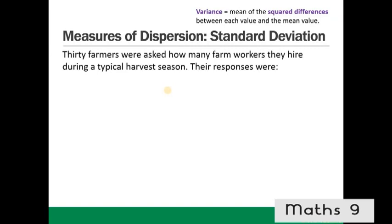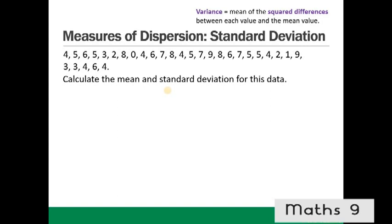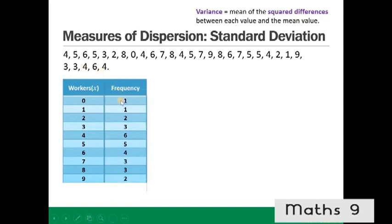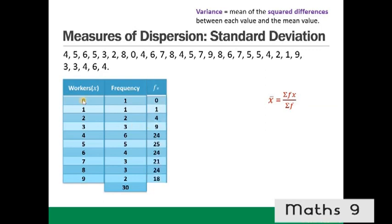Example: 30 farmers were asked how many farm workers they hire during a typical harvest season. We put the data in a frequency table with values 0–9 and their frequencies, totalling 30. To find the mean, we compute the sum of (frequency × value) = 150, then divide by 30, giving a mean of 5.